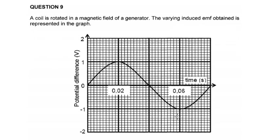The question says a coil is rotated in the magnetic field of a generator. The varying induced EMF obtained — as we spoke about in the previous video — is what is represented on this graph. On the y-axis we have potential difference, and on the x-axis we have time. Analyzing this, we basically have the shape of a sine graph, which means we can immediately identify this as an AC generator.